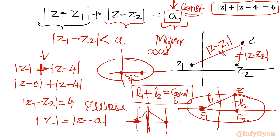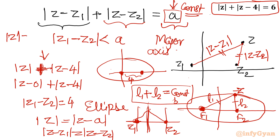For the perpendicular bisector case, z lies on the line equidistant from z₁ and z₂. And when mod z equals r — a constant — you get a circle. This is how you can conclude the locus of a complex equation. I hope you liked this video. Thank you so much for watching. Do not forget to like, share, and subscribe. Bye bye, till the next video!